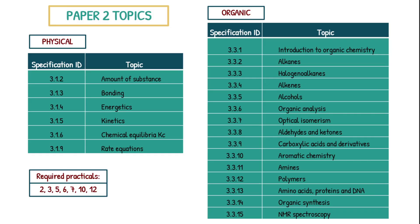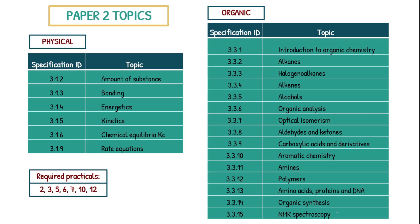Feel free to pause the video here. This is every single topic that can come up. Over here we have all the physical ones. Paper one is not physical only — paper one is physical inorganic, and then paper two is physical organic. These are all the organic topics right here, so there's an insane amount of content for paper two, a lot more than paper one. There are also practicals. I made the mistake during my A-levels of neglecting practicals. Paper two also has practicals, so keep that in mind.